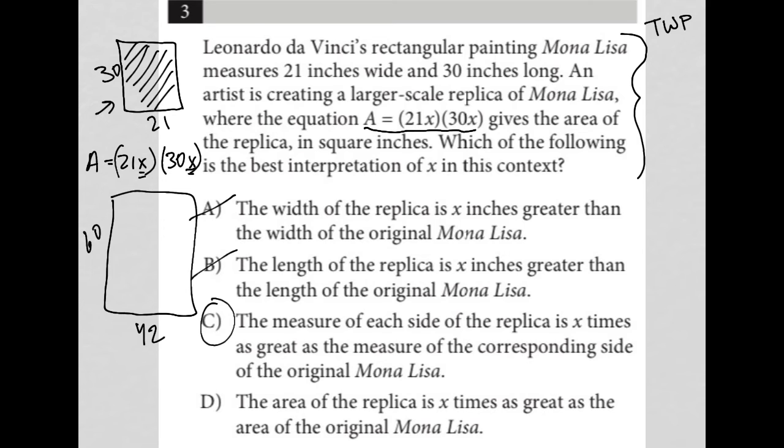The area of the replica is X times as great as the area. So that's not true. That's close to true, but it's actually not true. Because if we were to simplify this, we're going to get X times X, which is X squared.